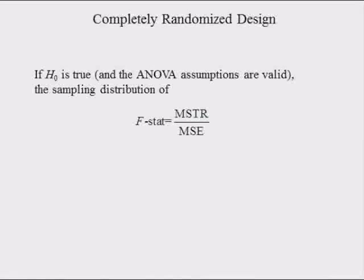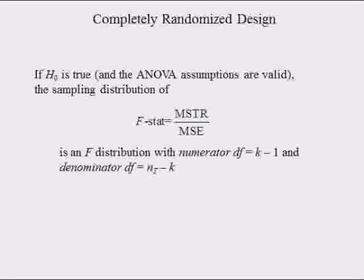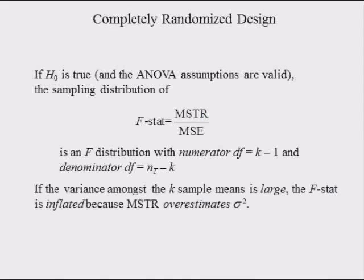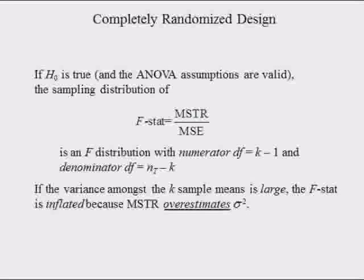If the null hypothesis is true, the sampling distribution of the ratio of MSTR and MSE is an F-distribution with numerator degrees of freedom equal to K minus 1 and denominator degrees of freedom equal to NT minus K. If the variance amongst the K sample means is large, the F-stat is inflated because the MSTR due to treatments overestimates population variance sigma squared.